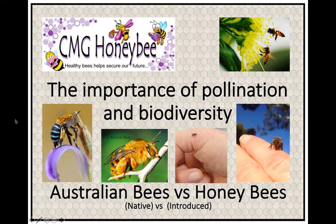If you have any questions, just pop them in the chat. So I want to talk about the importance of pollination and biodiversity and touch on our Australian bees versus the honeybee. The Australian bees are native and the honeybees are actually an introduced species. When an introduced species gets out in the wild, like dogs, cats, foxes, or rabbits, they actually become feral. The honeybee is not native to Australia. Our Australian native bees need more recognition and support.